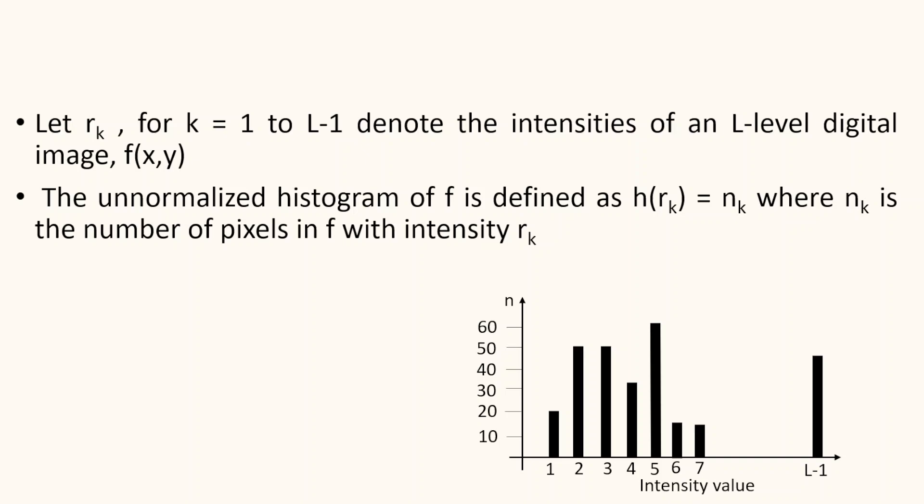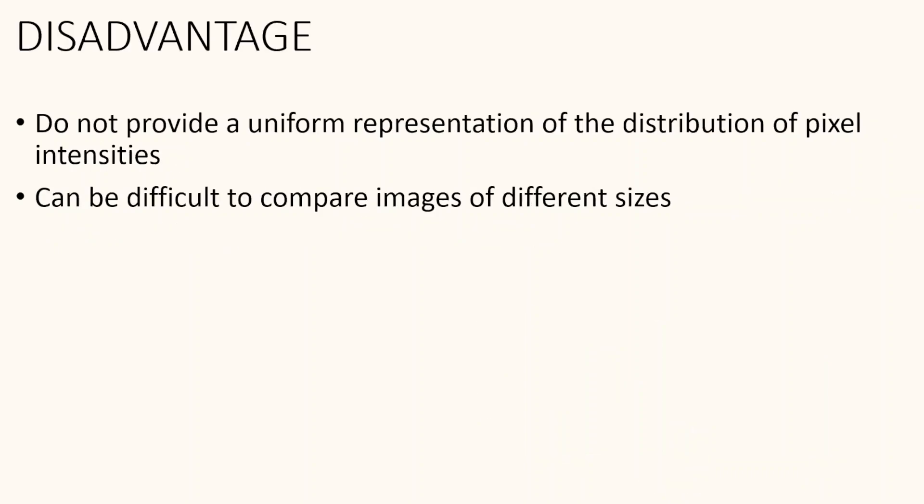Unnormalized histograms are generally less used compared to normalized histograms because it is difficult to compare two images of different sizes using them. When we want to compare or perform tasks on images of different sizes, we use normalized histograms instead. The disadvantage of the unnormalized histogram is that it does not provide a uniform representation of the distribution of pixel intensity, making it less practical compared to the normalized histogram.